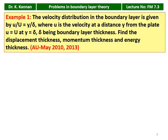Example number 1, from May 2010 and 2013 question paper. The velocity distribution in a boundary layer is given by u/U = y/δ, where small u is the velocity at any location, capital U is the free stream velocity, y is the position, and δ is the boundary layer thickness. The boundary condition is u = U at y = δ. Find the displacement thickness, momentum thickness, and energy thickness.